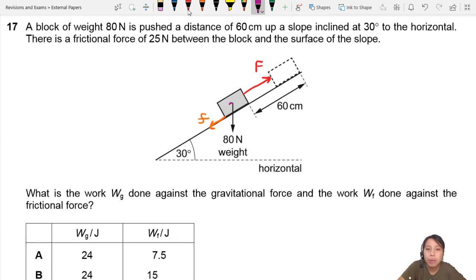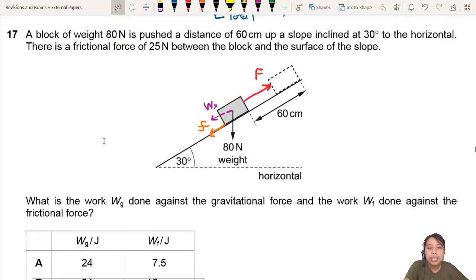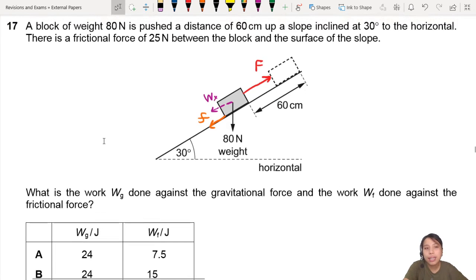Now this 80 newton weight has a component in the horizontal. So when you are doing work, pushing it up, you are opposing the purple color weight. You are opposing the orange color friction force. So you need to figure out what is the value of that. What is the work done against gravitational force and the work done against the frictional force?